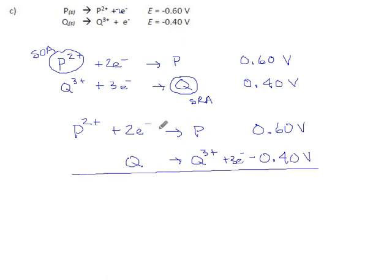So if we add those up, we'd have to match up the electrons, but I'm not going to bother with that because we're just trying to find the voltage here. We add these reactions. We add their voltages, 0.60 plus negative 0.40. The overall voltage for this would be 0.20 volts.